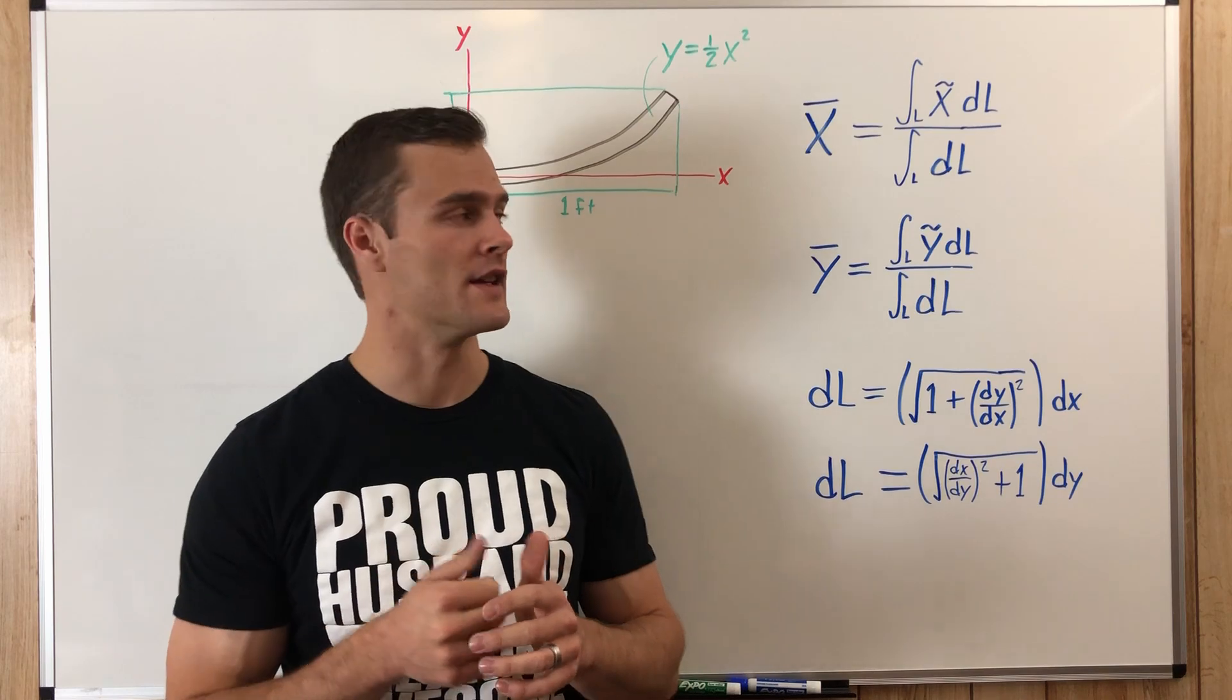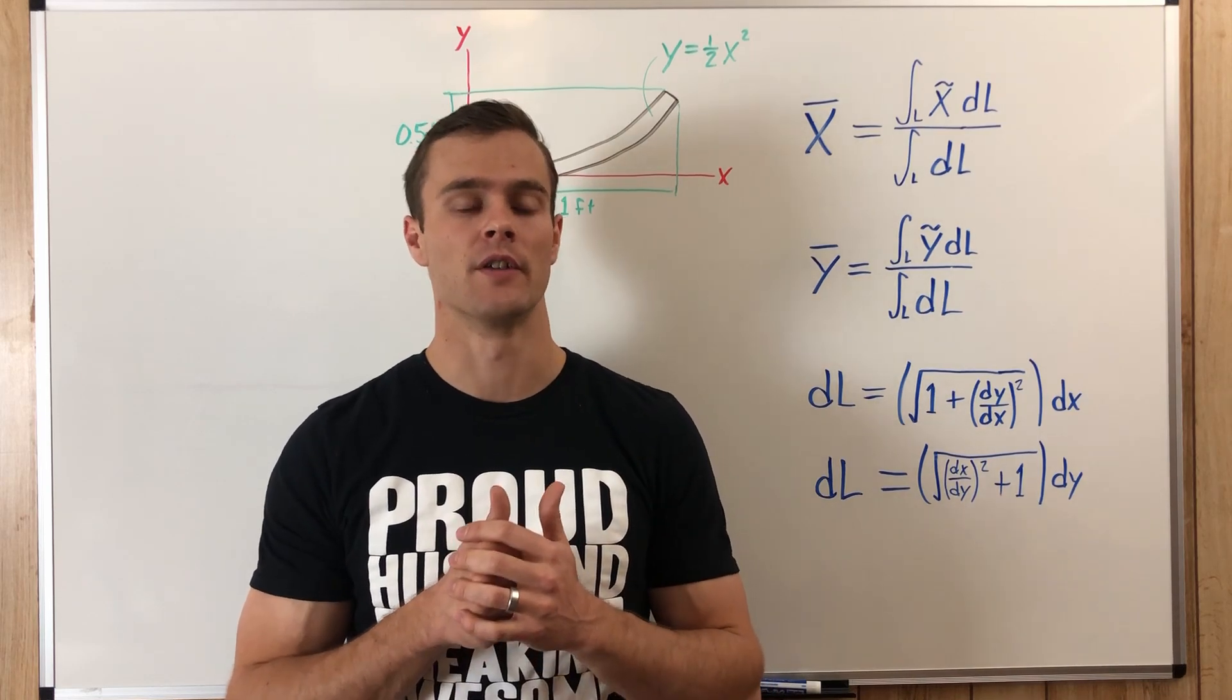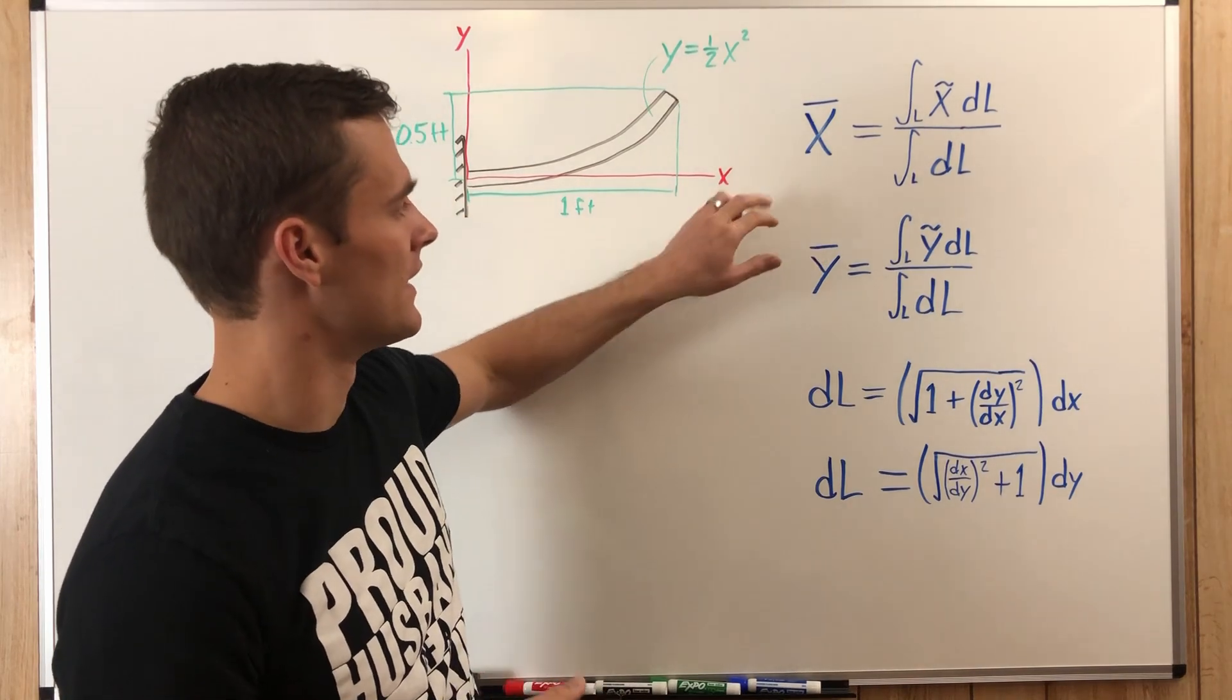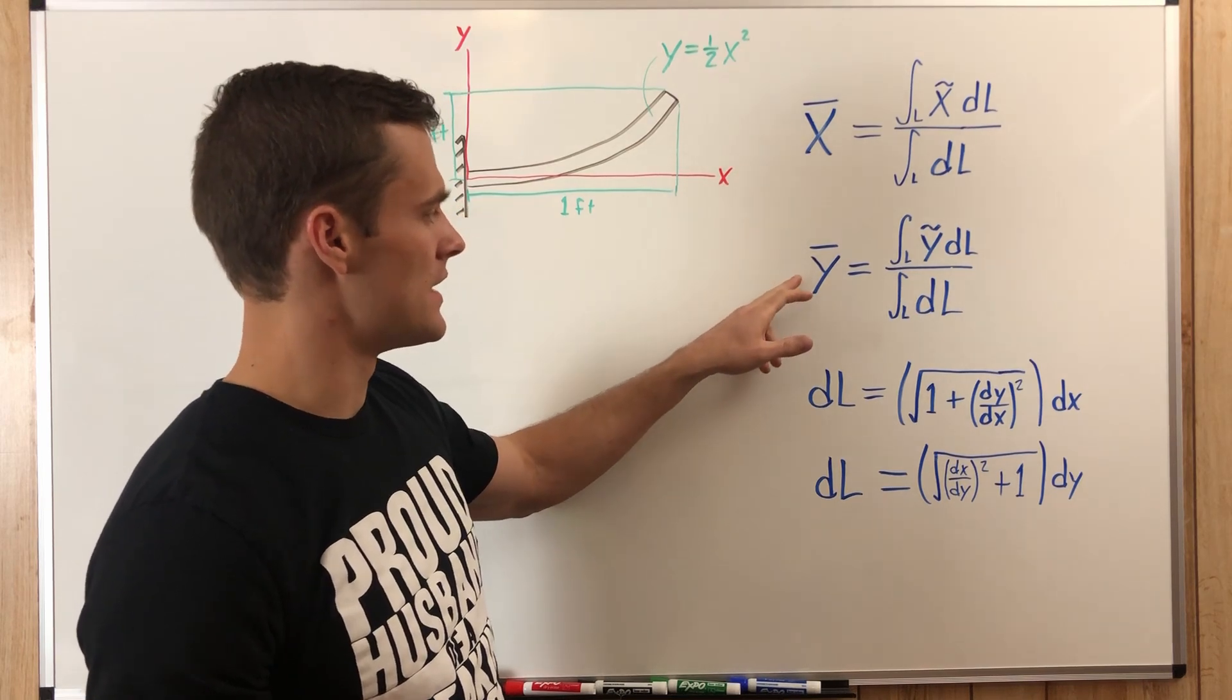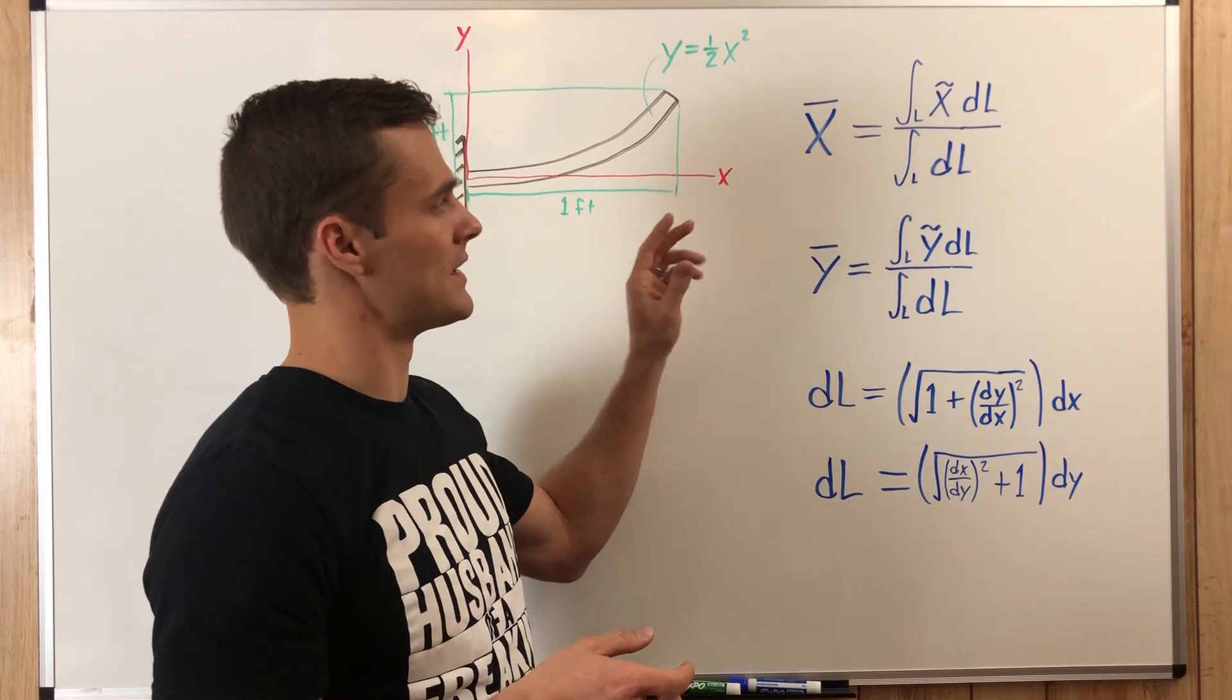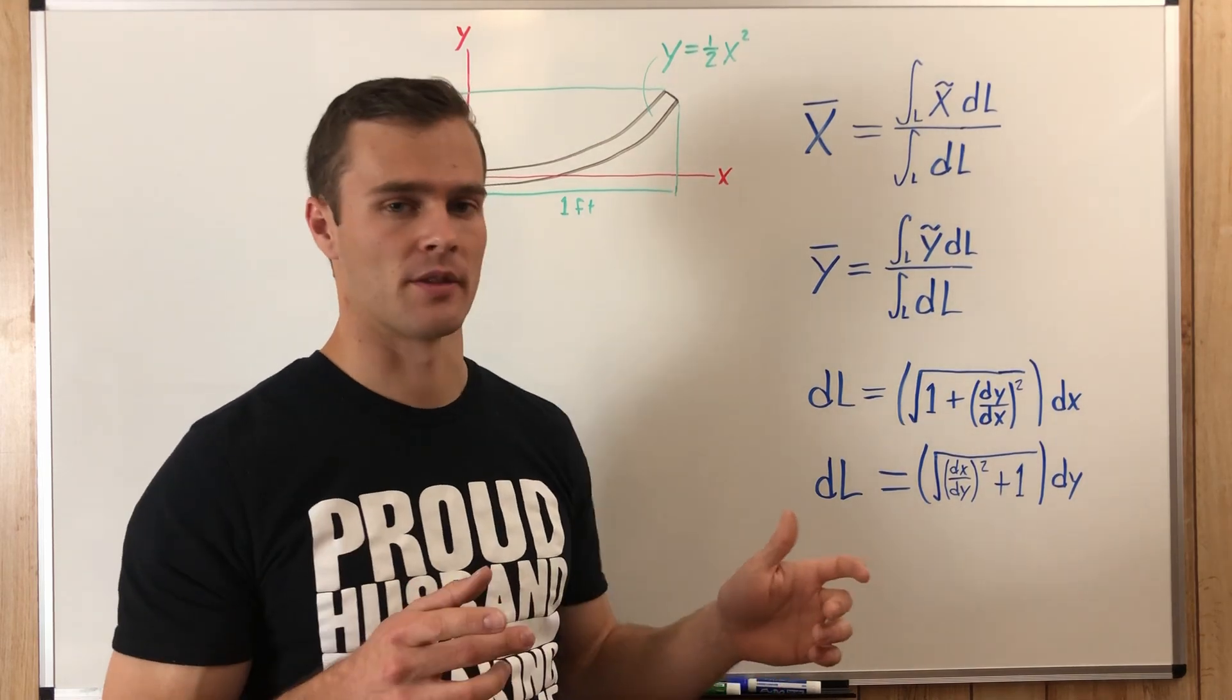We're going over the equations and how to solve for the centroid or the center of gravity or the center of mass of a line. And so these equations that are involved is the equations for x-bar and y-bar. Now when you see a bar over the x or y, or in some cases z, that means the center of gravity or center of mass, centroid. They're all the same thing, but I'll just call them the center of gravity.